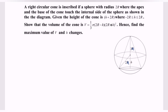Hello everyone, welcome to my channel. In this video I'm going to discuss an example for optimization problems. A right circular cone is inscribed — meaning inserted — in a sphere with a radius 2R, where the apex (meaning the top) and the base of the cone touch the internal side of the sphere, as shown in the diagram.